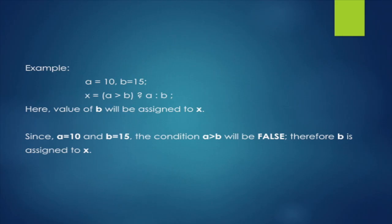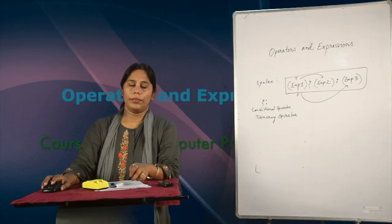For example, suppose A equals 10 and B equals 15. Then the statement X equals A greater than B ? A : B — since A greater than B is false (because 10 is less than 15), it gives the third part, which is B. So the value 15 will be assigned to X.